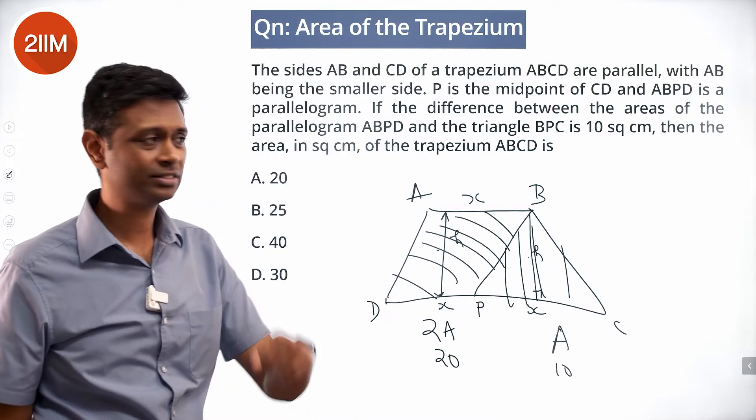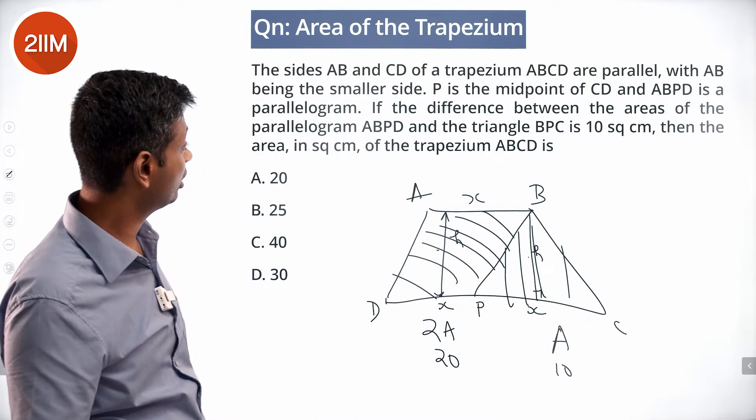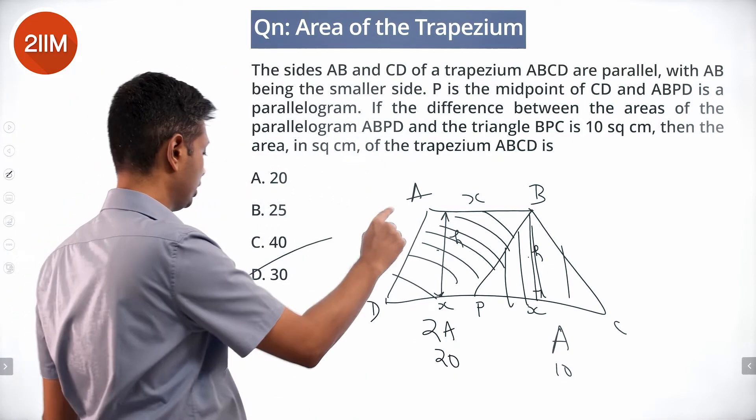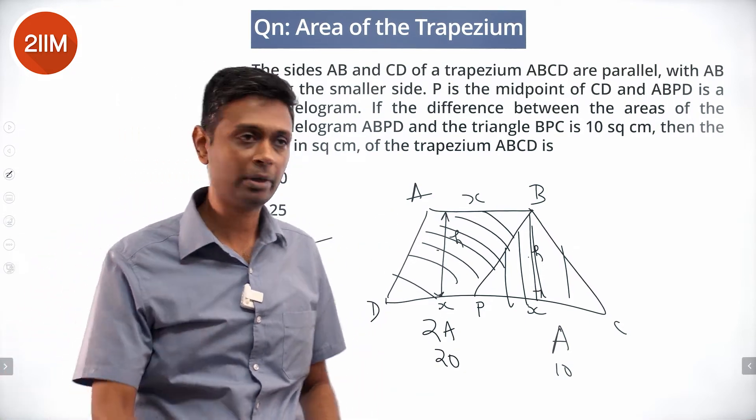20 minus 10 is 10. Then the area in square centimeters of trapezium ABCD is 30: 20 plus 10 equals 30. Easy question, just knock it out of the park.